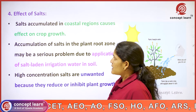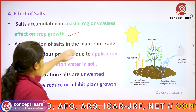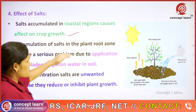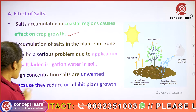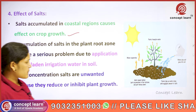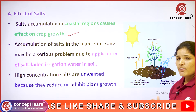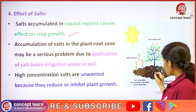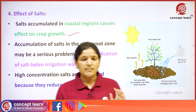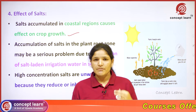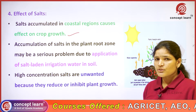Next is the effect of salts. Salts accumulated in coastal regions cause effects on crop growth. Accumulation of salts in the plant root zone may be a serious problem due to application of saline and irrigated water in the soil. High concentration of salts reduces and inhibits plant growth. These salts accumulate due to the osmosis effect, making the plant unable to take up nutrients, which decreases plant growth.